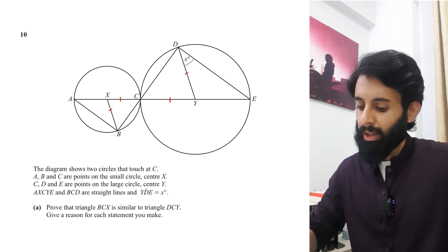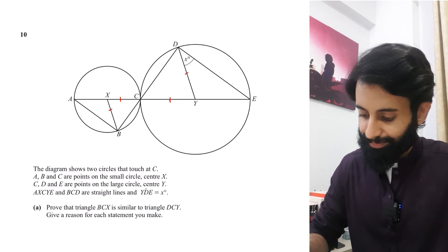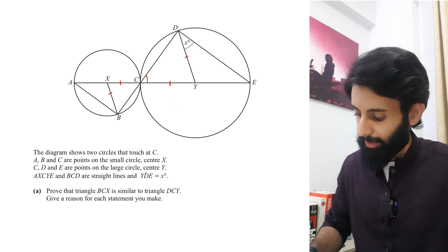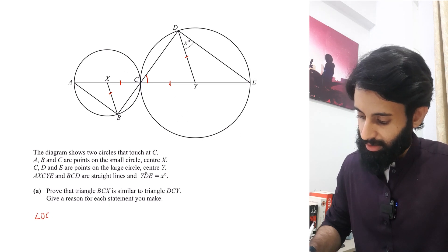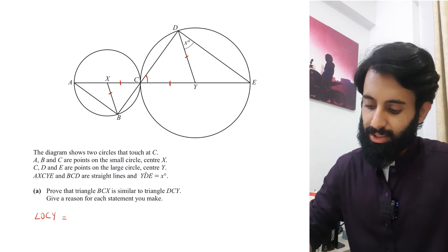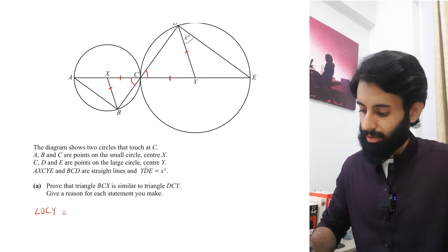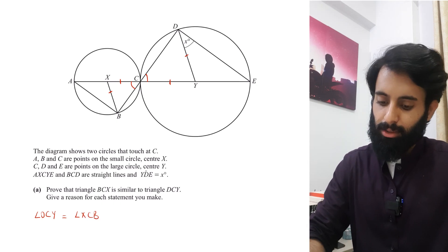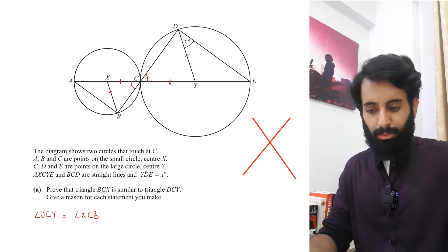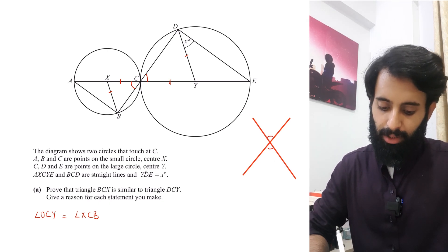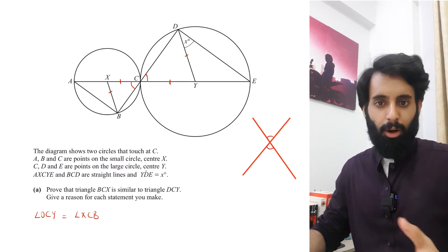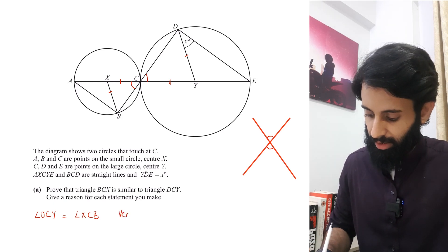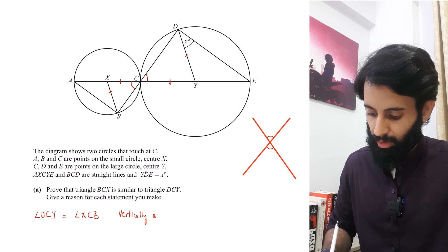Another key observation: angle DCY is the same as angle XCB. The reason is that whenever two straight lines cross, opposite angles — vertically opposite angles — are equal. So the reason behind this is that they are vertically opposite angles.